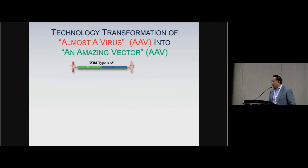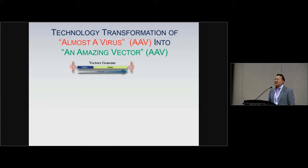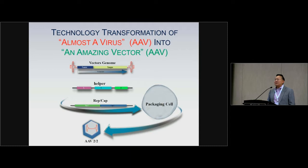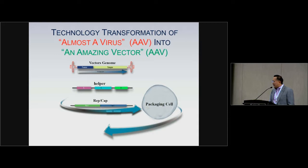How do you convert AAV into an amazing vector? Basically, you take out viral genes, replace them with an expression cassette of your transgene of interest, and then provide helper functions — whether from baculovirus, adenovirus, or herpes simplex virus — along with RepCAP sequences. You put it into a packaging cell and produce the virus of interest. The beauty is that you can do trans-encapsidation, replacing the original AAV-2 capsid with different capsids such as AAV-9 or AAV-8, generating different serotypes.